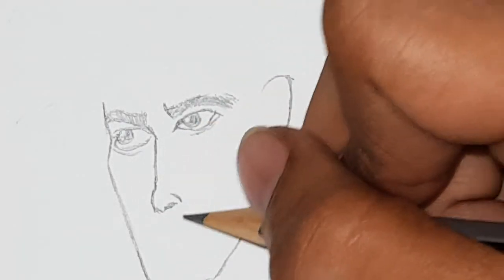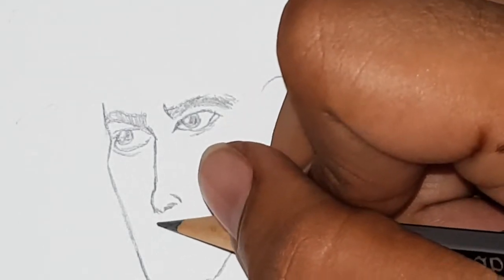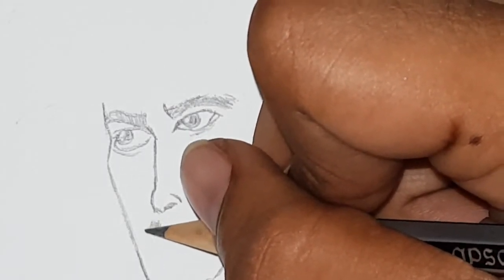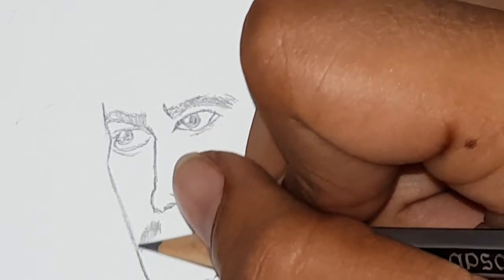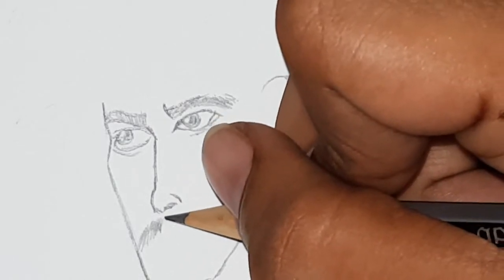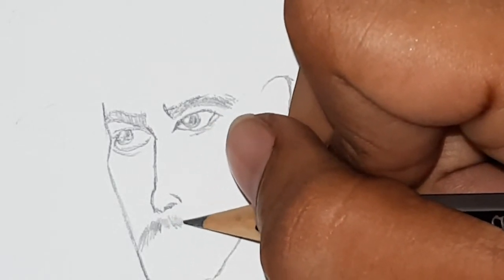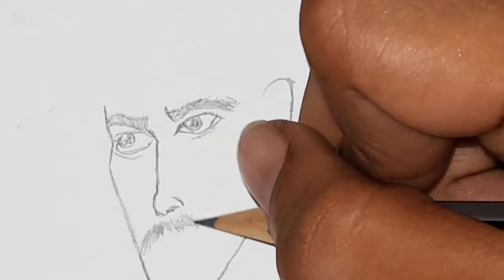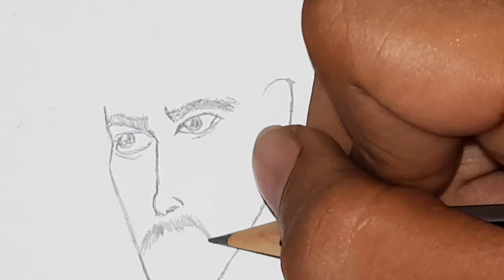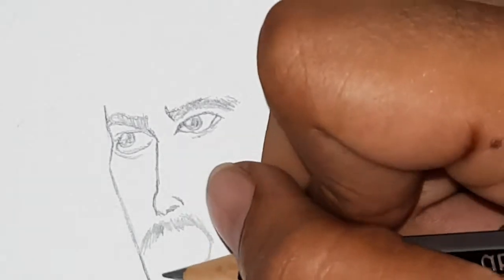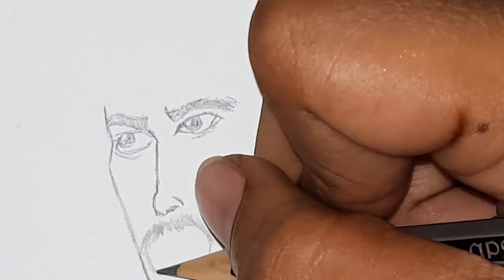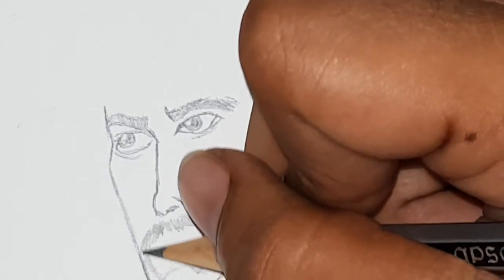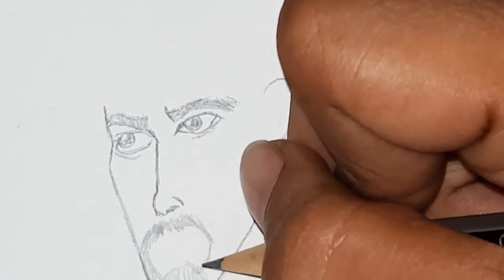Now, before you start with the mouth, you have to draw the mustache. It's not too thick. It's only a group of light lines. It comes down like that and goes in. Take it up and bring it down and lightly shade it. That's his beard.